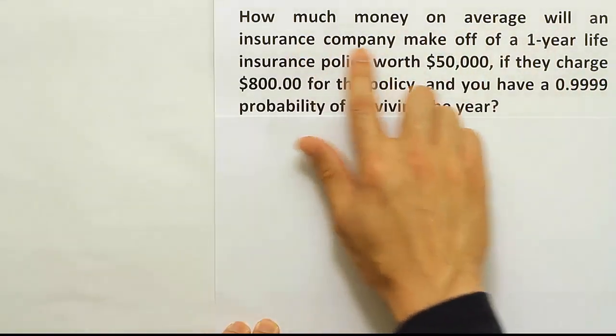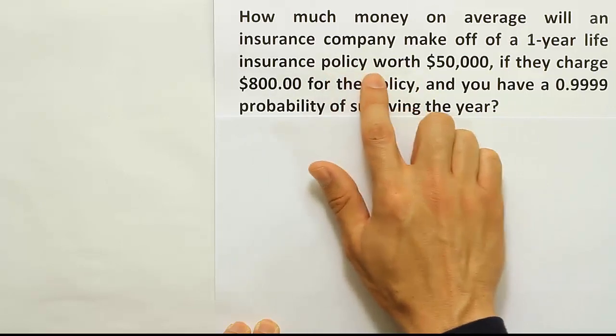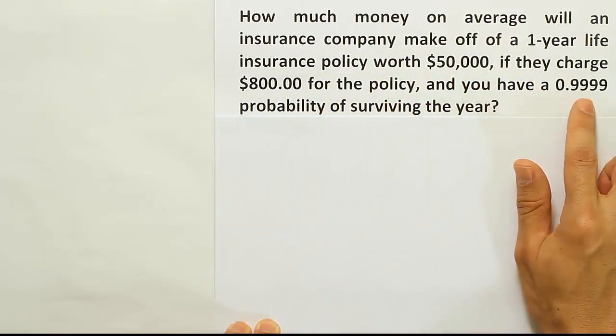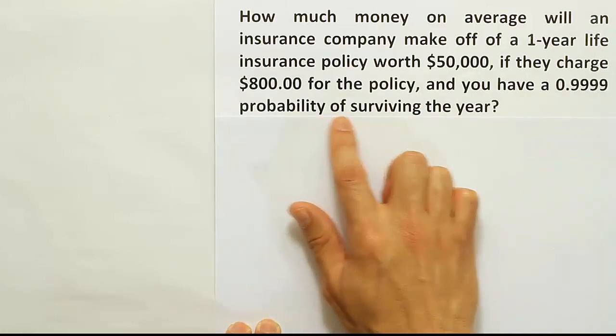How much money on average will an insurance company make off of a one-year life insurance policy worth $50,000 if they charge $800 for the policy, and you have a 0.9999 probability of surviving the year?